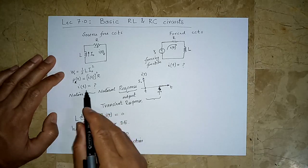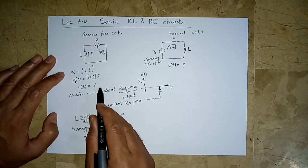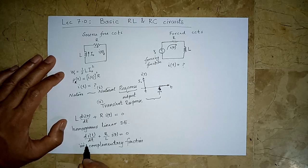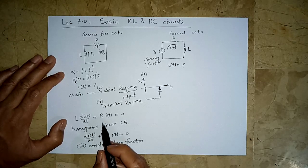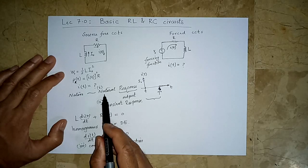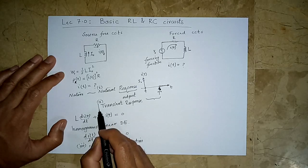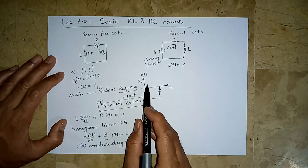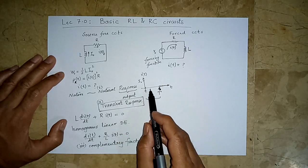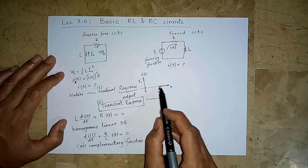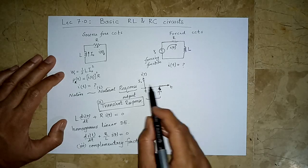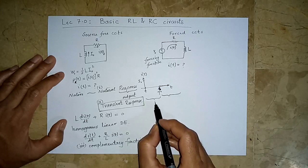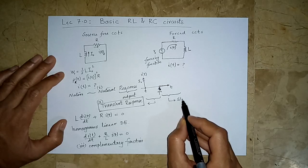So there are many names for this response i(t): it is called the natural response, it is also called the transient response, and mathematically it is known as the complementary function. In circuit analysis we will most often use the names natural response and transient response. The transient response is the most appropriate name for the time period we are interested in. There are generally two time periods we care about: the time when the response varies, and the time when the response remains steady. The varying part is the transient response, and the other part is the steady-state response.